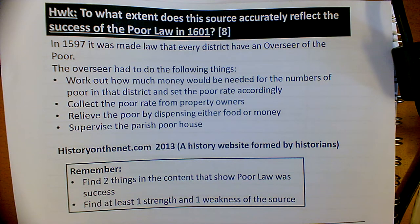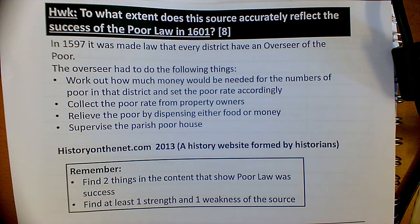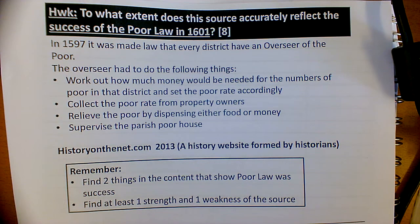To help you with this, I'm going to talk you through the homework that you guys did for me this week, which is question 2 from the Elizabeth paper. We have to analyse a source for its accuracy. In this case we had a source and we were using it to say how accurate is this source in showing us that the Poor Law was a success.